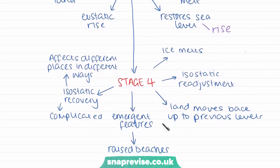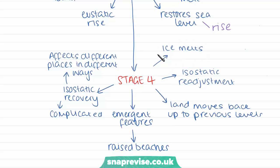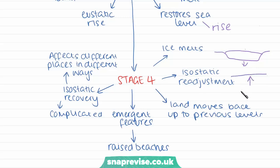In stage four, as the ice melts we get isostatic readjustment. Previously, the heavy weight of the ice was pushing the land down; when the ice melts, the land rises back up to its normal position. This is called isostatic recovery. When the ice melts, the land moves back up again, causing the production of emergent features — including raised beaches — which we'll also look at later in the video.